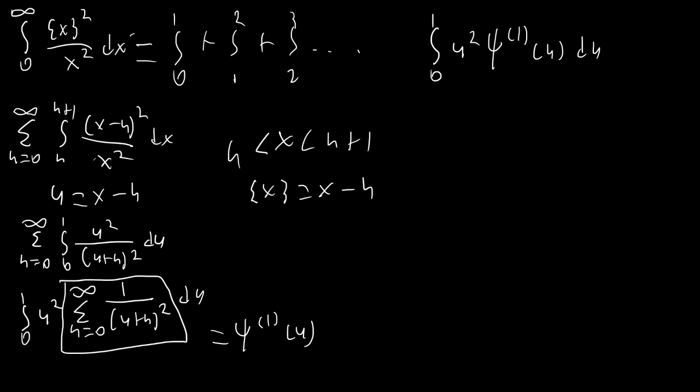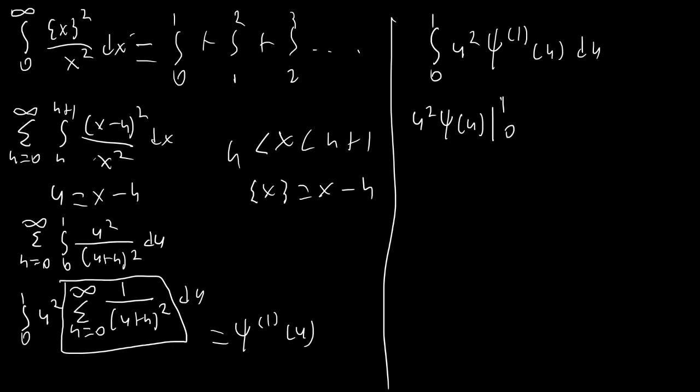To solve this we'll use integration by parts — integrating ψ₁(u) and differentiating u². We end up with u² ψ(u) evaluated at 1 and 0. Before evaluating the bounds, I want to discuss an important limit: the limit as x → 0 of x² ψ₁(x), because we'll encounter x² times ψ₁(x) at the lower bound, and since ψ₁(x) → ∞ as x → 0, we have a 0 · ∞ situation.